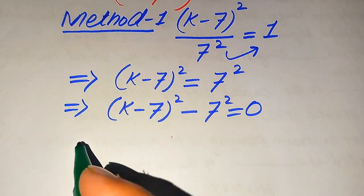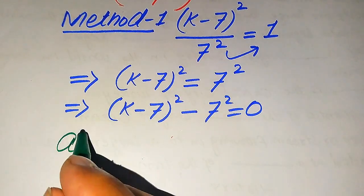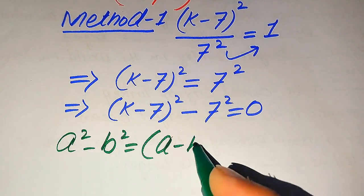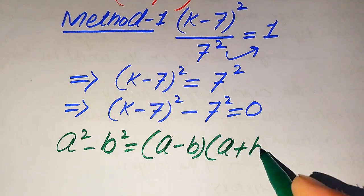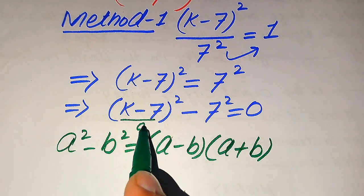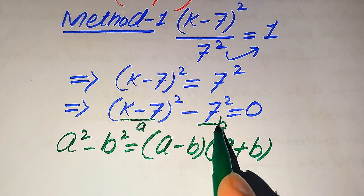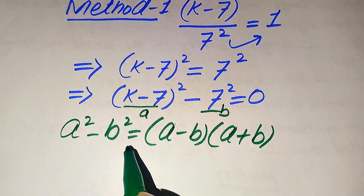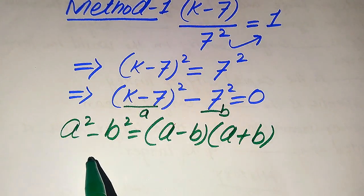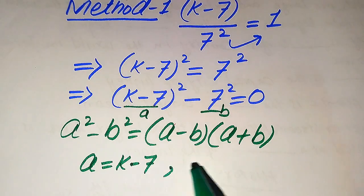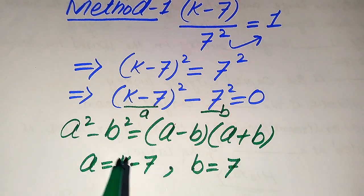Here we use the algebraic formula: a squared minus b squared equals (a minus b)(a plus b). According to this formula, we expand our equation. The base of the first term is our a and the base of the second term is our b, so we substitute a equals (k minus 7) and b equals 7 into this formula.